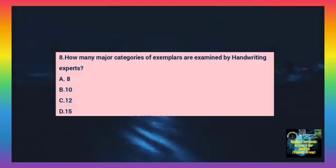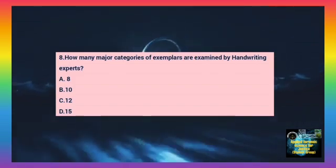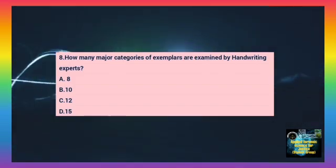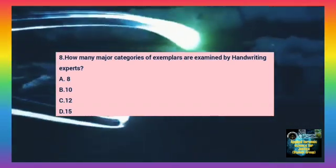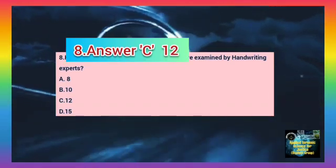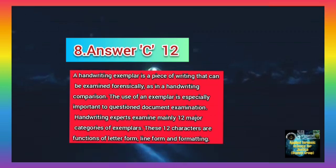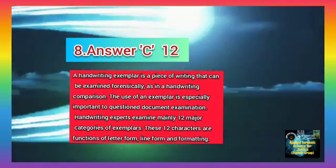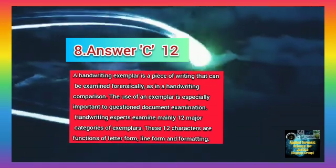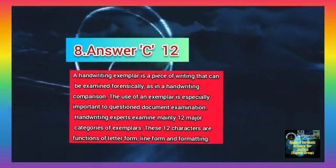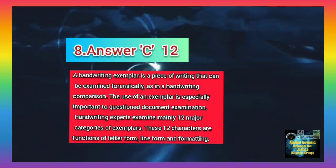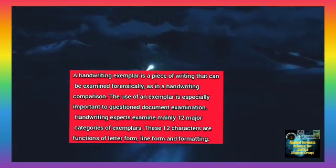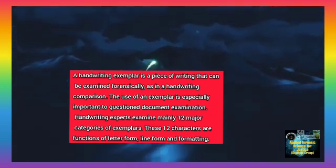Question number 8. How many major categories of exemplars are examined by a handwriting expert? Option A: 8. Option B: 10. Option C: 12. Option D: 15. The correct answer is C, 12. A handwriting exemplar is a piece of writing that can be examined forensically in a handwriting comparison. The use of exemplars is especially important in question document examination. Handwriting experts examine mainly 12 major categories of exemplars. These 12 categories are functions of letter form, line form, and formatting.